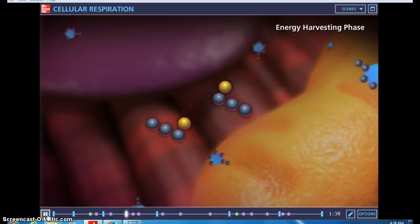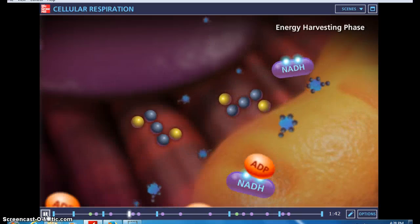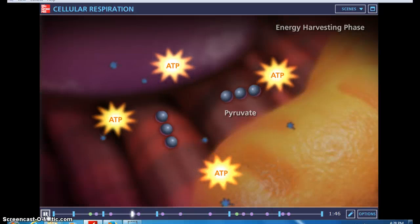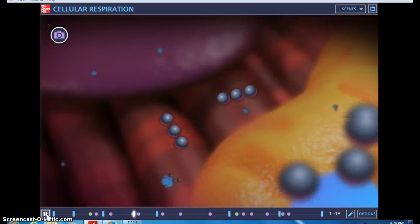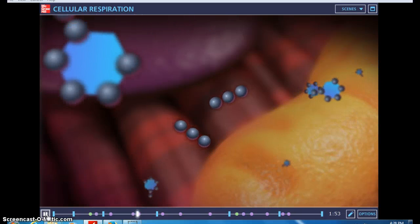During this phase, the two three-carbon molecules are converted to pyruvate, and ATP is formed. Glycolysis is a ten-step reaction that involves the activity of multiple enzymes and enzyme assistants.